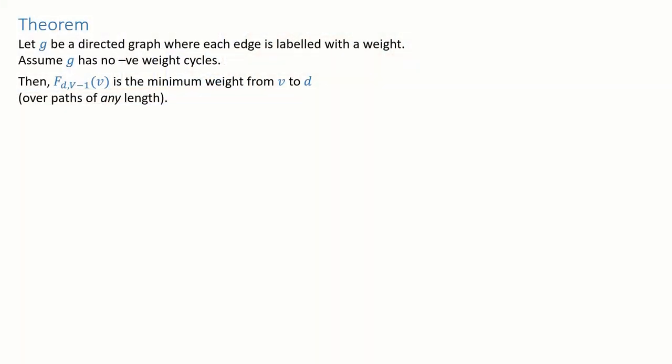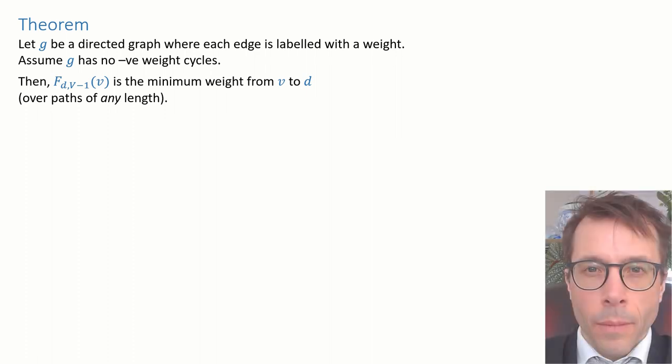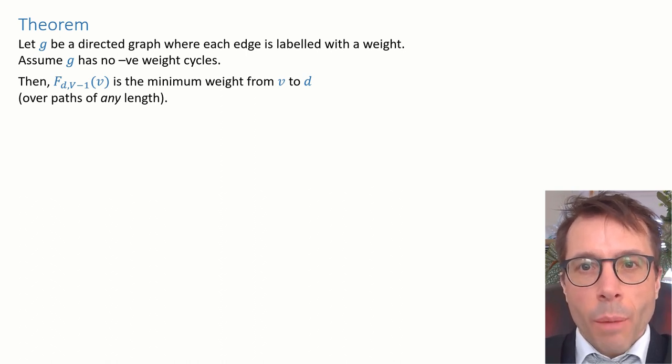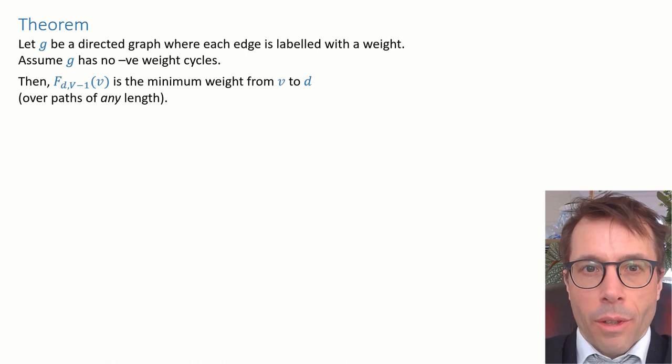What I want to do instead in this video is prove the theorem as it stands and explain why this condition about no negative weight cycles permits us to set a time horizon equal to v minus one. The proof's actually pretty simple. I want to argue that there must be a minimum weight path with less than or equal to v minus one edges. I'm certainly not going to try to prove that every minimum weight path from v to d has less than or equal to v minus one edges. There might be some paths with more edges. I'm just going to argue that there exists some path with less than or equal to v minus one edges, which is a min weight path.